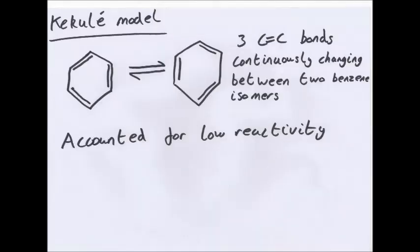Now Kekulé's model. He said that benzene had 6 carbons with 3 carbon double bonds. Now this would, you'd expect to be able to react with bromine in electrophilic addition reactions, but it doesn't.